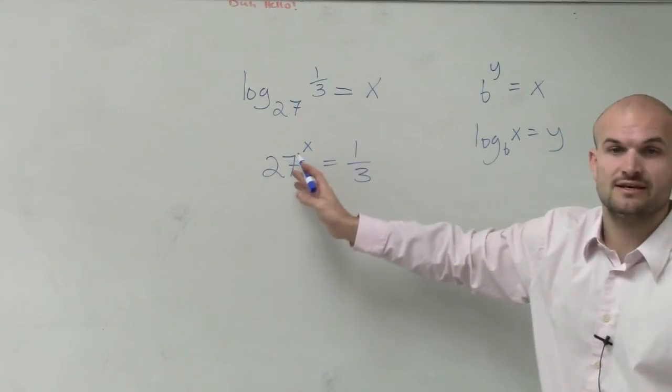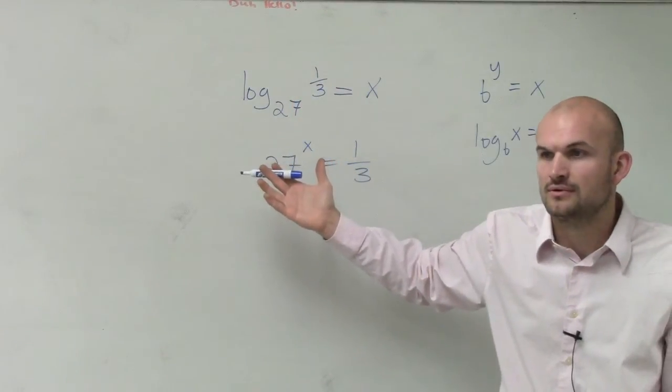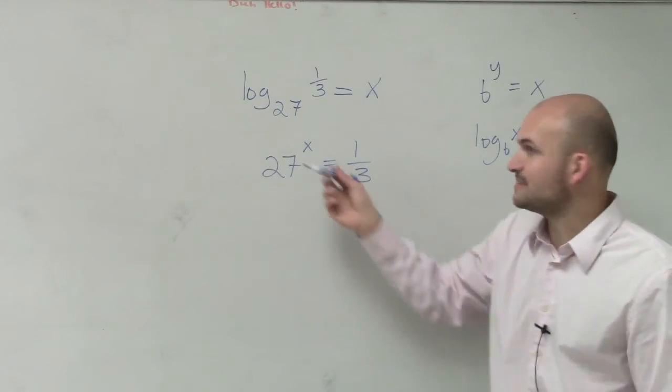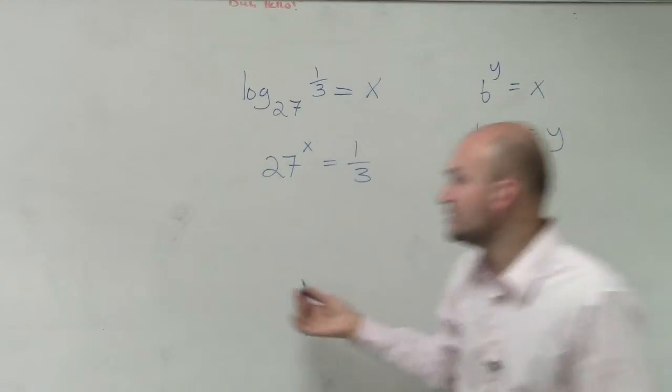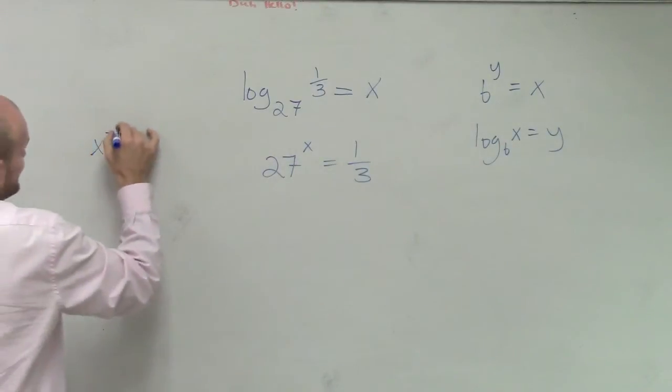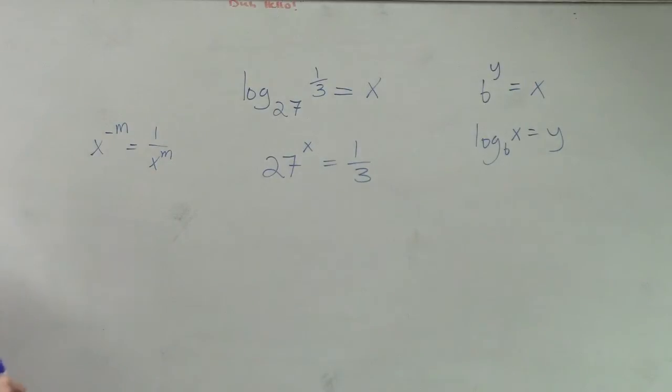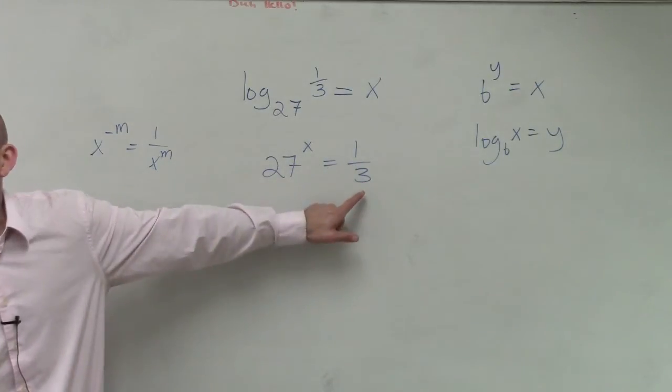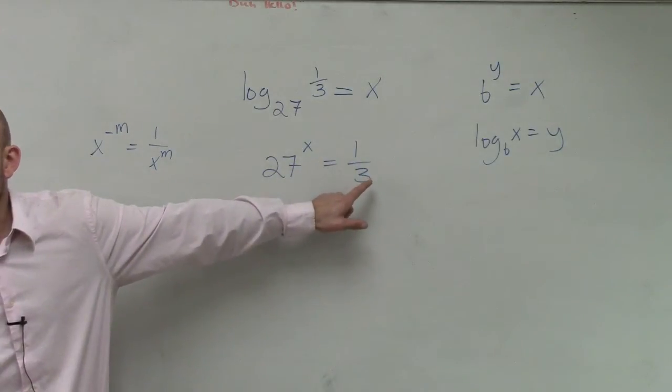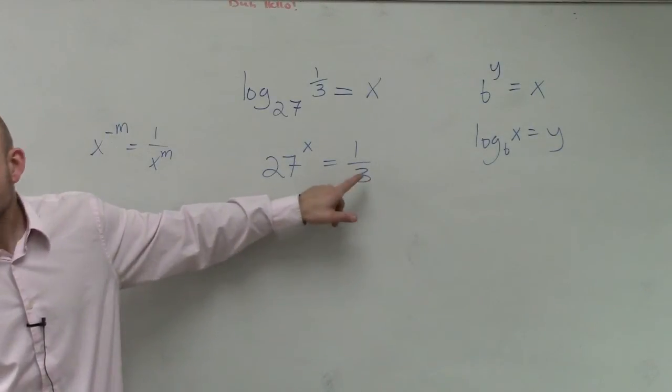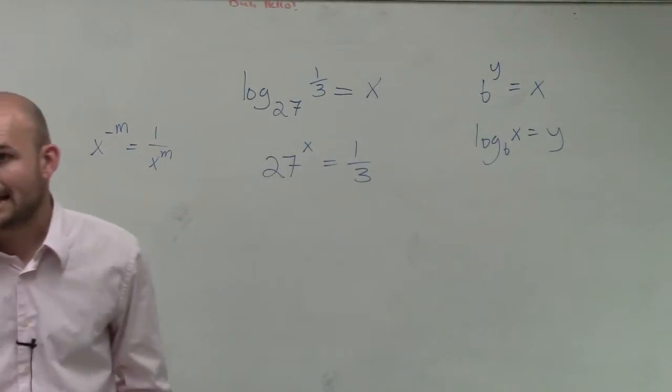So obviously, x cannot be greater than 0. It has to be negative. And one reason why I know it has to be negative is because, remember, when you have a negative exponent, x to the negative m equals 1 over x to the m, right? So negative is going to make it smaller than 27, and it's also going to make it a fraction. So we know that x has to be negative.